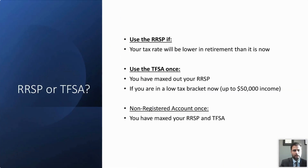Now that we've established that dollar cost averaging is a time-tested strategy that works, it will work for any type of account — whether you're saving in an RRSP, TFSA, or non-registered account. We'd recommend an RRSP account if your income is expected to be lower in retirement than it is now. We'd recommend a TFSA if you've maxed out your RRSP or if you make under $50,000 in taxable income. And lastly, a non-registered account if you've maxed out both your RRSP and TFSA accounts.